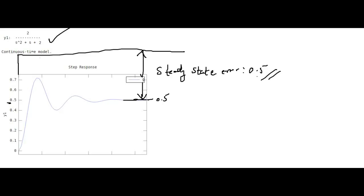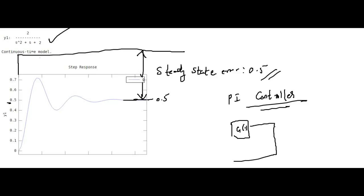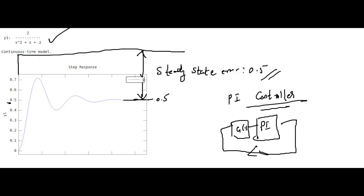So we have a significant steady state error problem in the control system block. We need to make use of a proportional integral controller, which is known to improve — that is, decrease — the steady state error. To do that, we introduce the PI controller in the forward path of our initial control system block, which had G(S) in a unity feedback loop.